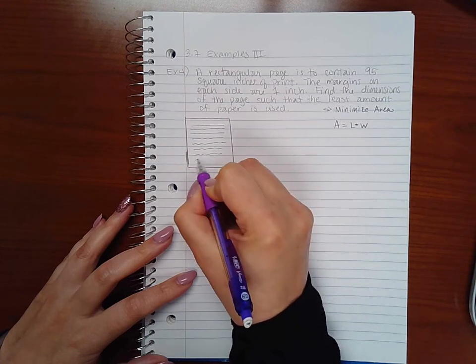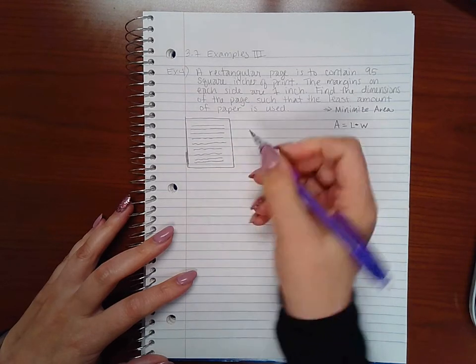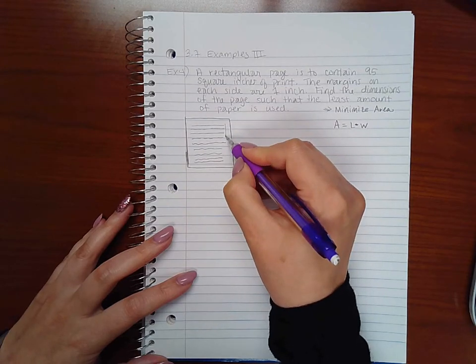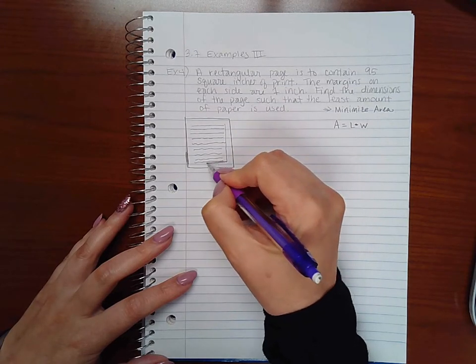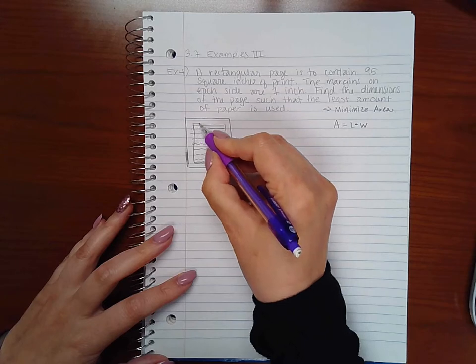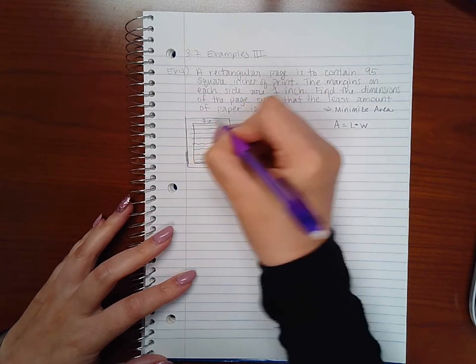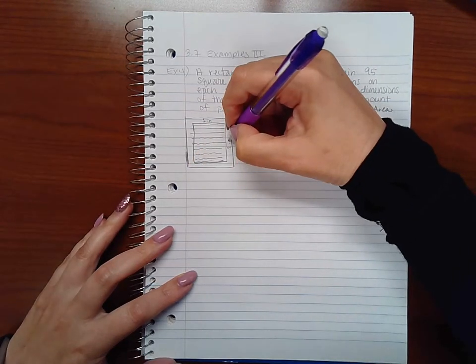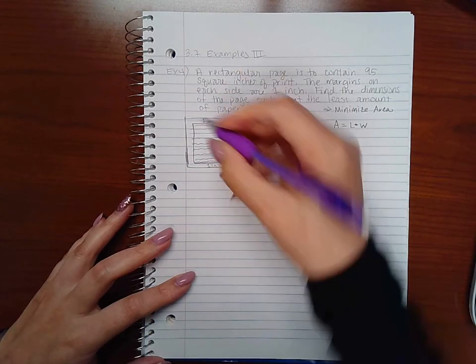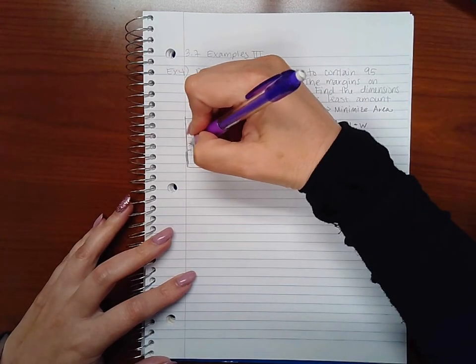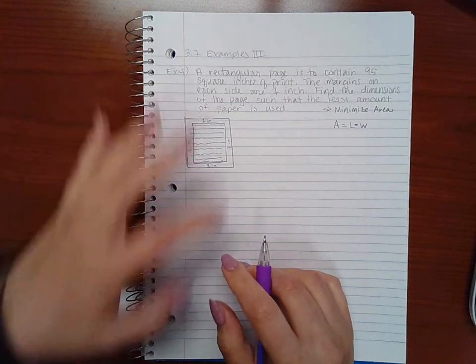So basically what that means is that my print is all here, right? And the margins all around the page are one inch, which means if I box my print, this is one inch, this is one inch, this is one inch, and this is one inch.